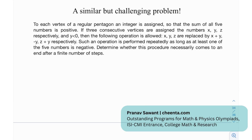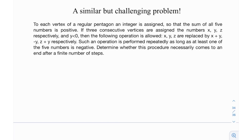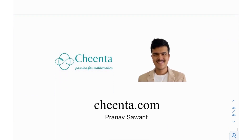At the end, here is a similar challenging problem: To each vertex of a regular pentagon, an integer is assigned such that the sum of all five numbers is positive. If three consecutive vertices are assigned numbers x, y, z, and y is less than zero, then the following operation is allowed: x, y, z are replaced by x+y, -y, and z+y respectively. This operation is performed repeatedly as long as at least one of the five numbers is negative. Determine whether this procedure necessarily terminates after a finite number of steps. It's a relatively tough but famous problem — try it out and let me know your progress. See you in the next video!